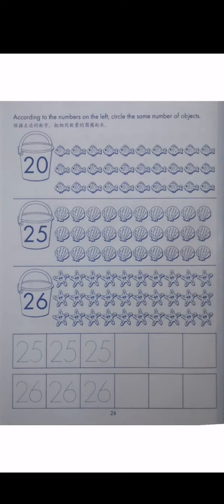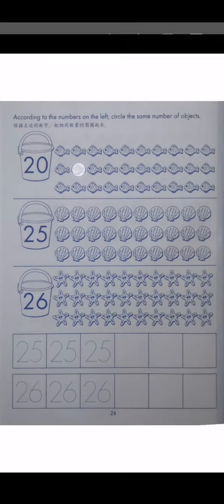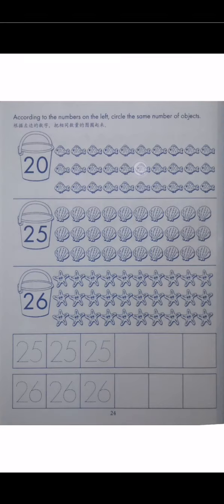According to the numbers on the left, circle the same number of objects. First, we will look at 20. Children, please count together: 1, 2, 3, 4, 5, 6, 7, 8, 9, 10, 11, 12, 13, 14, 15, 16, 17, 18, 19, 20. So you have to circle 20 fishes.